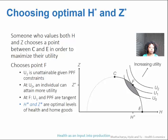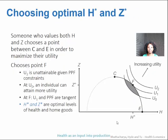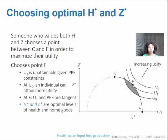Let's say the person likes point F, somewhere in between C and E. U0 falls inside of the curve, so it represents leaving utility on the table. U1 is tangential — it's the point where the individual's indifference curve is tangential to the outside of the production possibilities curve. That means it's lying right along the maximum level of possible utility, so that's going to be their optimal point.